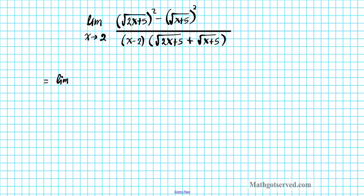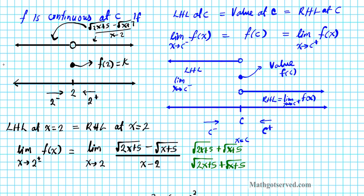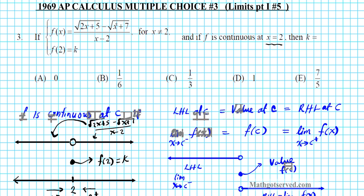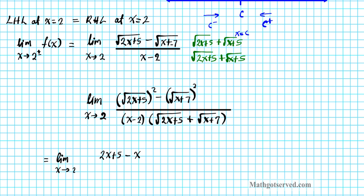So the limit as x approaches 2 becomes: (2x + 5) − (x + 7) in the numerator. Note: I made a slight mistake earlier — the expression should have x + 7, not x + 5, throughout. Distributing the minus sign gives 2x + 5 − x − 7. Combining like terms: 2x − x = x, and 5 − 7 = −2, so the numerator simplifies to x − 2.